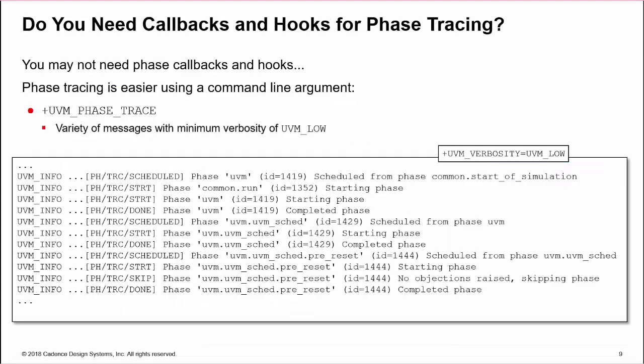The simulation phase hooks and callbacks can be complex, and there may be easier options depending on your goals. The command line option, +uvm_phase_trace, is an easy way to debug phase transitions. This option reports a variety of messages, from verbosity UVM_LOW, as shown here, and upwards. The option reports when a phase is scheduled, started, and completed, with extra reports for run phases and sub-phases, identifying raised and dropped objections.